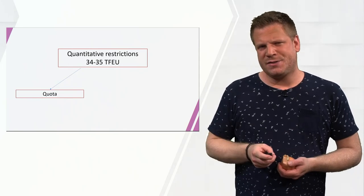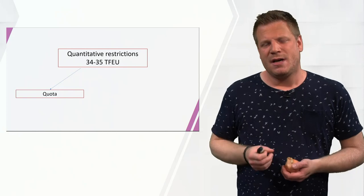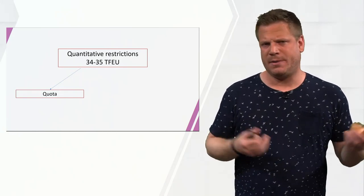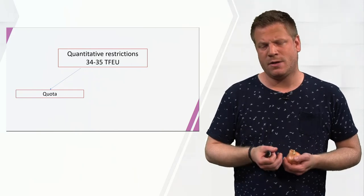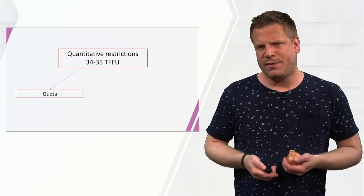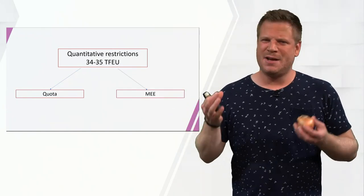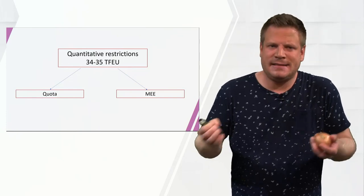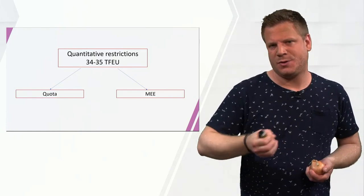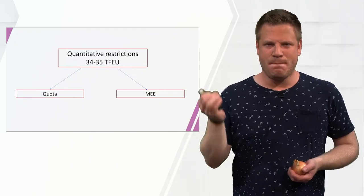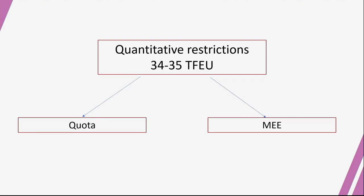Countries are not crazy, so they will probably not uphold a literal quota because they know it is forbidden. However, sometimes a country upholds a rule that actually has the same effect as a quota, but is not directly a quota in itself. We call these rules measures having equivalent effect — MEE — although some textbooks use other abbreviations.